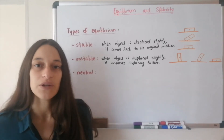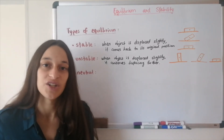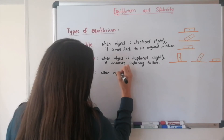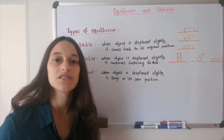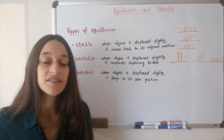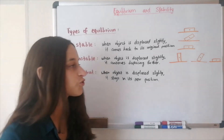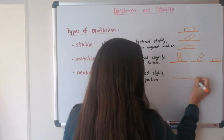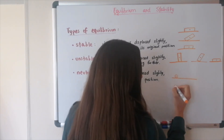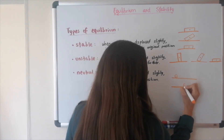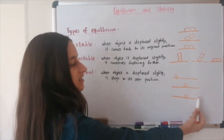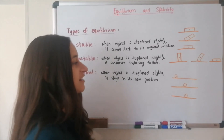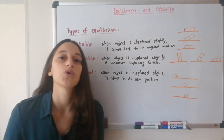Neutral equilibrium means that when you displace an object slightly, it stays in that new position when you let go. This is generally the case for objects that roll. For example, if you have a ball on a table and you roll it from the left side to the center, it'll stay at the center when you let go — it won't continue moving to the right and won't go back to the left. It's neutral equilibrium because it stays where you left it.